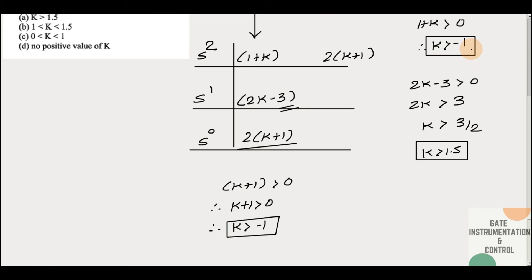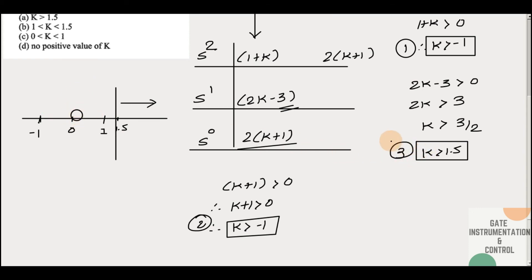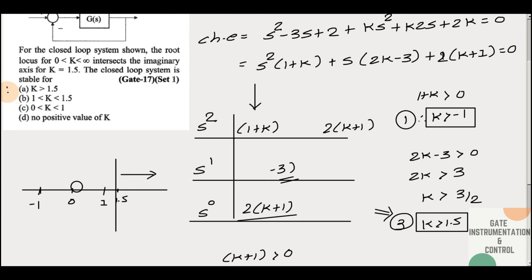So we have three conditions: k > -1, k > -1, and k > 1.5. Combining all three conditions on the number line — at -1, 0, 1, and 1.5 — the binding condition is k > 1.5. If we always take k greater than 1.5, our system will never be unstable. For example, if k = 0, the coefficient becomes -3 and the system becomes unstable. Therefore k must always be greater than 1.5, and option A is the correct answer.